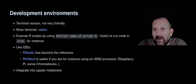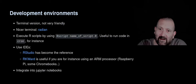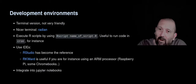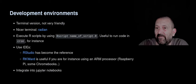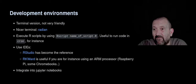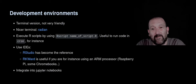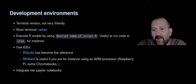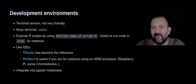In terms of development environments for R, there's a terminal version that is not super friendly. There's a slightly nicer terminal called Radian — all my slides are clickable so that link will take you there. You can execute R scripts by running the command R script followed by the name of the R script, which is very useful for automating code, for example if you need to refresh data daily. You can also use integrated development environments, and the most well known for several years has been RStudio, which is a great development environment.